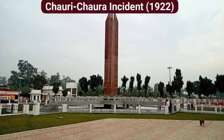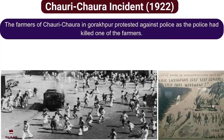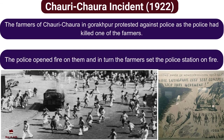Chauri Chaura incident in 1922. The farmers of Chauri Chaura in Gorakhpur protested against the police, as the police had killed a farmer. But the police opened fire on them, and in turn the farmers set the police station on fire.